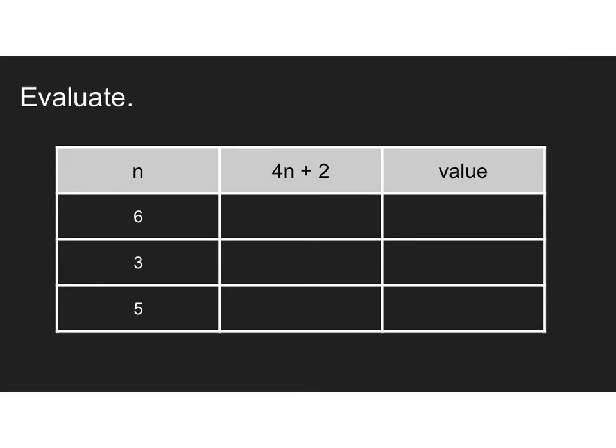Sometimes we might have a problem where we have a table that looks like this. And this is just asking us to use substitution. If n is equal to 6, this problem, we're going to substitute 6 for n. So 4 times 6 plus 2. We always do multiplication first. So 4 times 6 is 24. Plus 2 is 26.